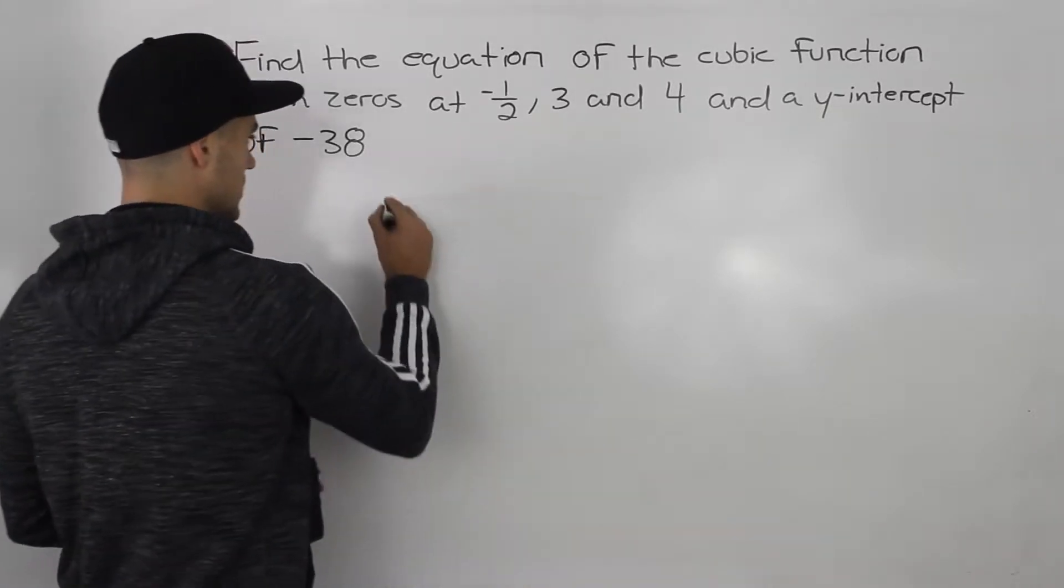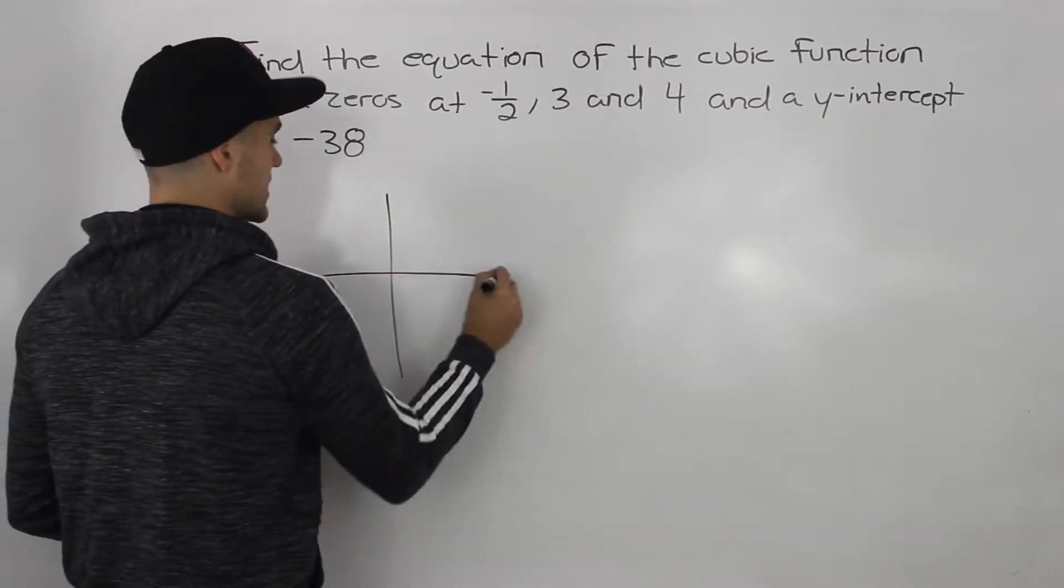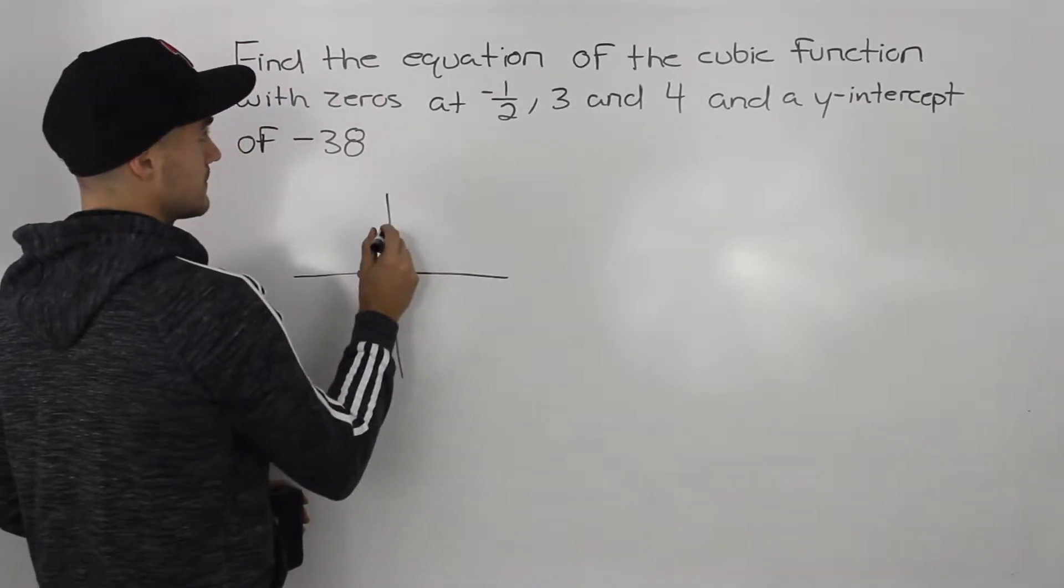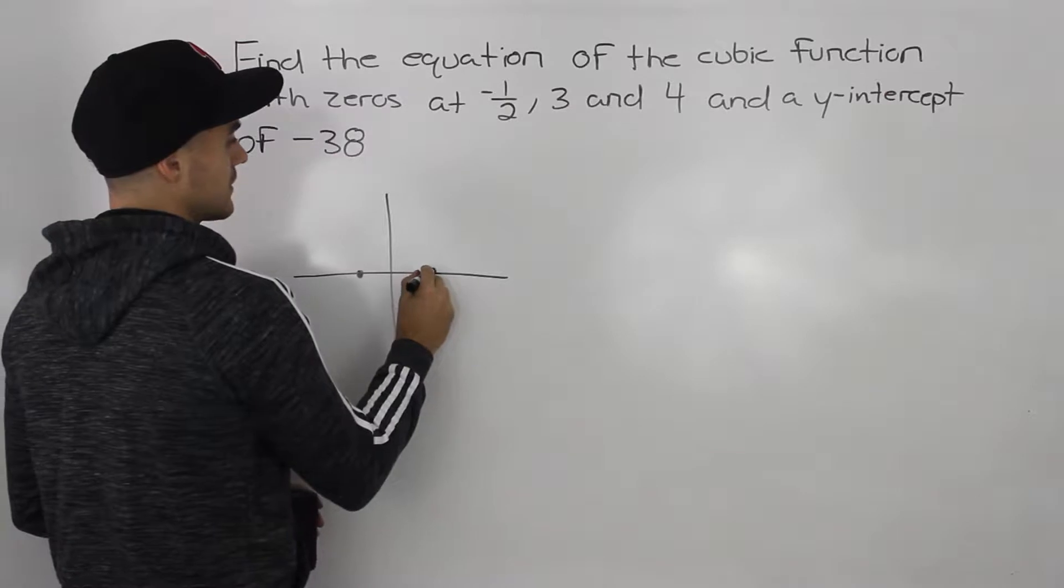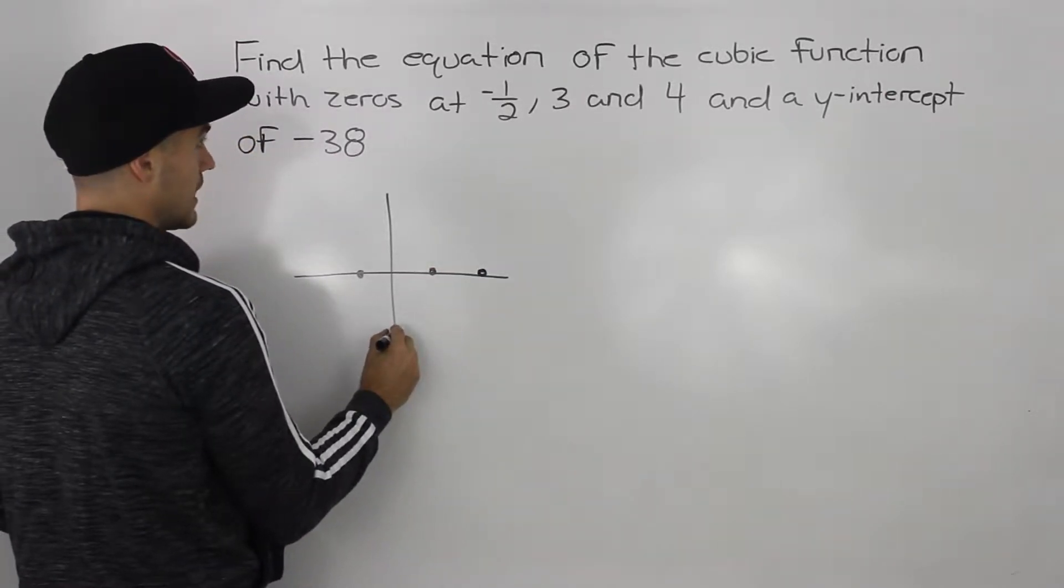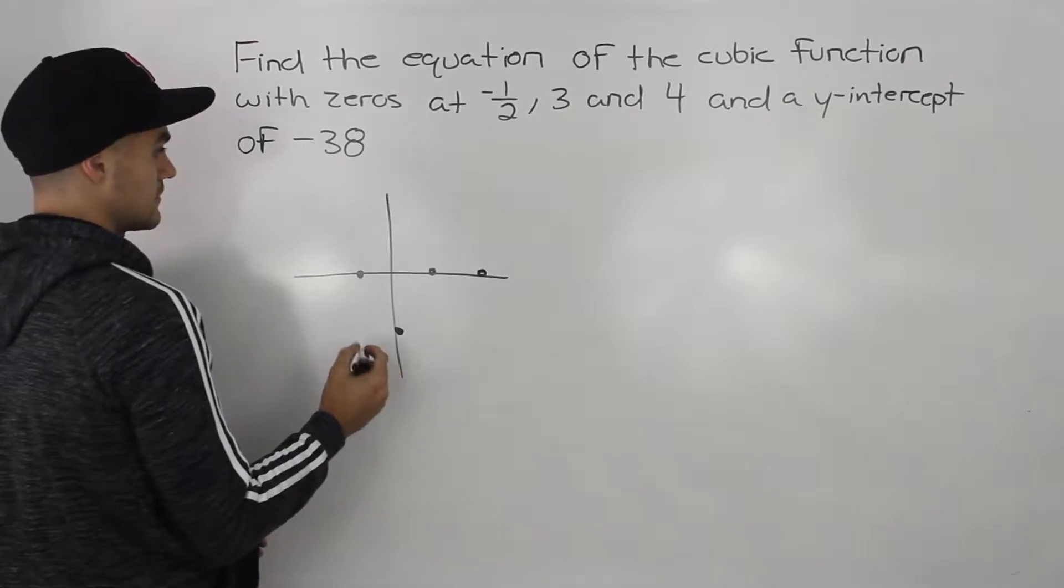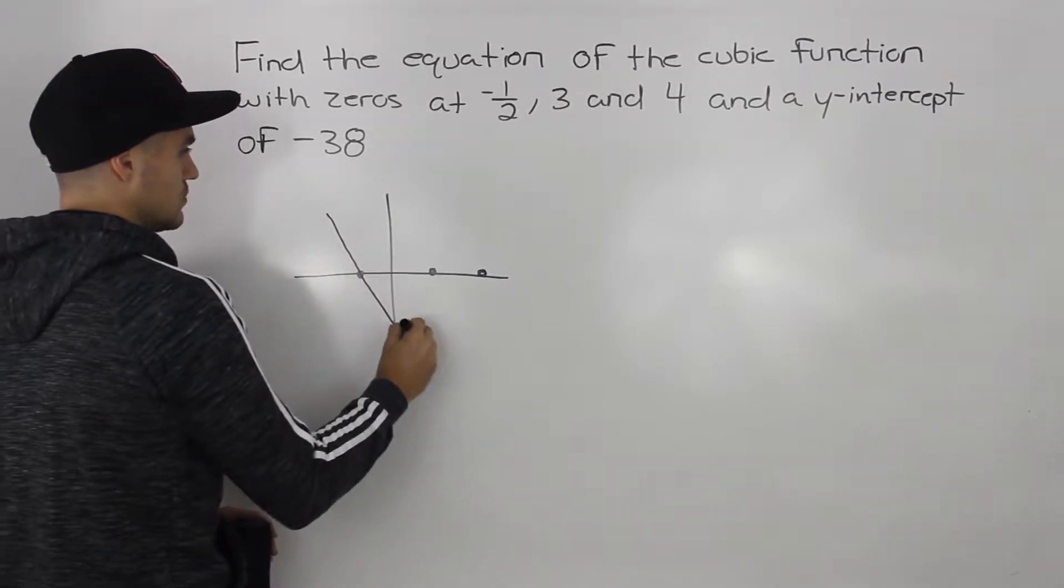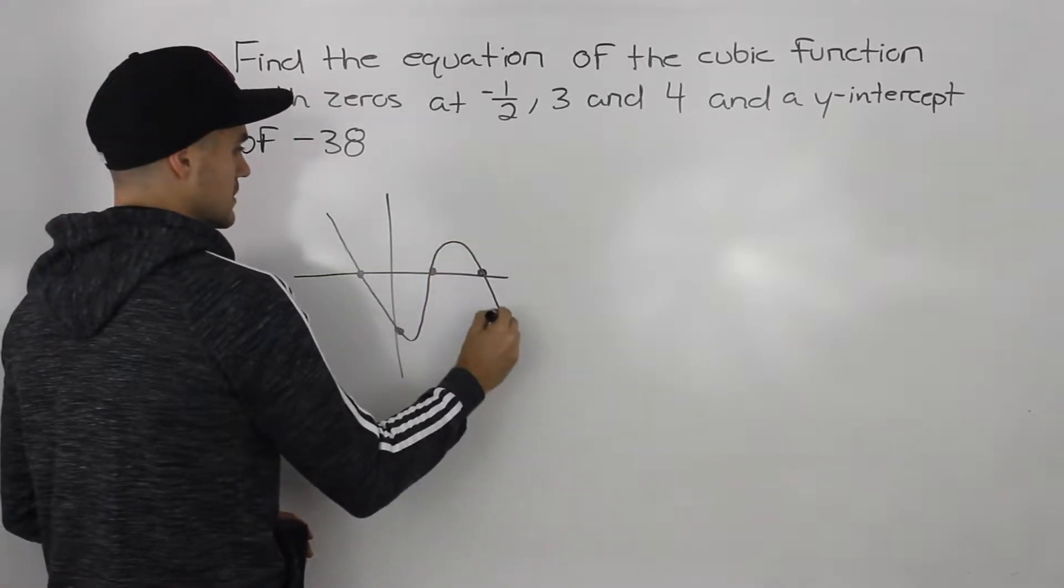So let's actually draw a quick sketch of what's happening here. So we have an x-intercept at negative one-half, x-intercept at three, x-intercept at four, then a y-intercept at negative 38. So this cubic function is going to look something like this.